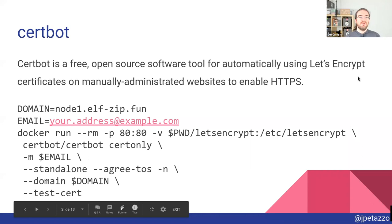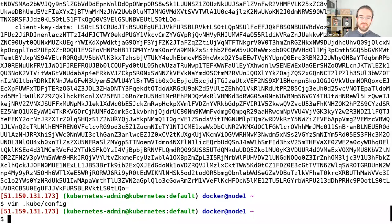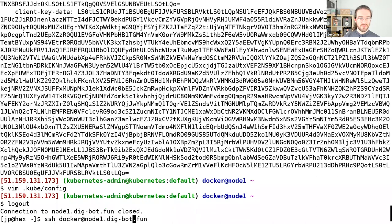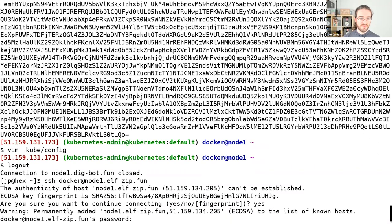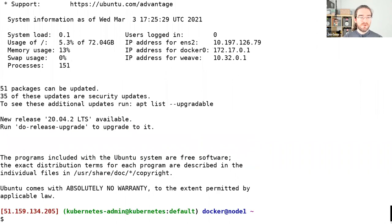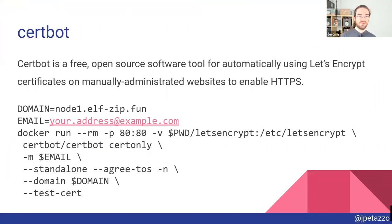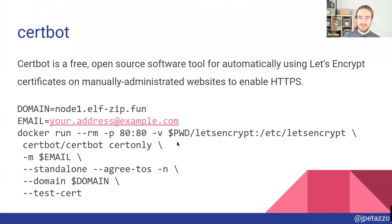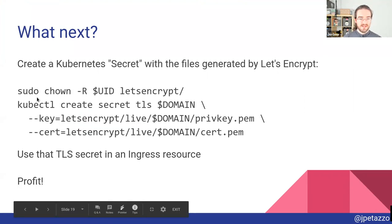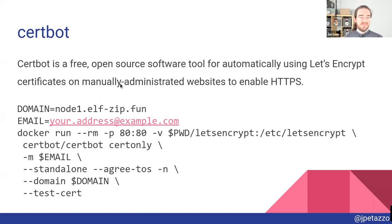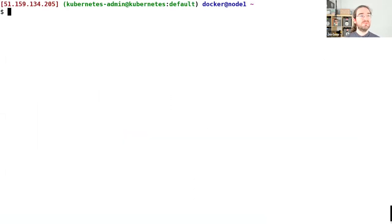I'm going to switch to a different cluster for my next demo and connect to a cluster called elfzip — elfzip.fun. Here I'm going to obtain a certificate the old-fashioned way — well, not that old-fashioned, but I'm going to use CertBot. CertBot is a tiny command-line tool to communicate with Let's Encrypt. The domain is going to be node1.elfzip.fun and my email address is jeromepetenzoni@gmail.com.